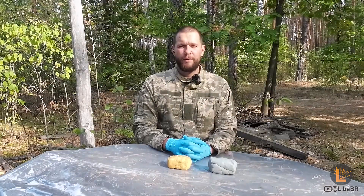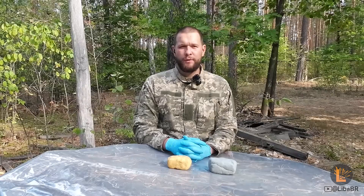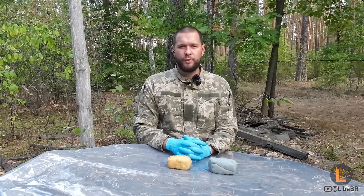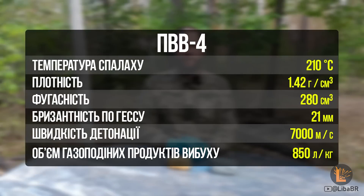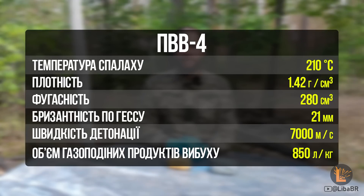Пластит марки ПВВ-4 – один з найпоширеніших видів пластиту. Він не гігроскопічний, не розчиняється у воді. Його щільність – 1,42 г/см³, швидкість детонації – 7000 м/с, температура спалаху – 210 градусів. Об'єм газоподібних продуктів вибуху – 850 л/кг, фугасність – 280 см³, бризантність по ГЕСу – 21 мм.